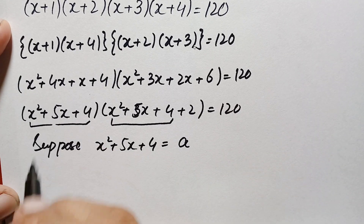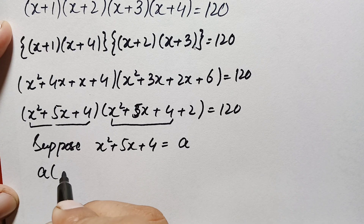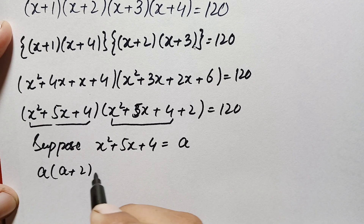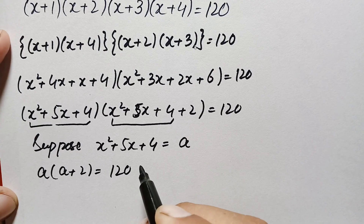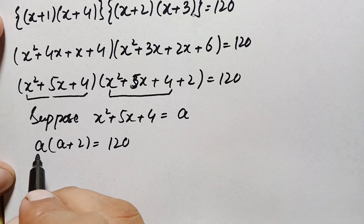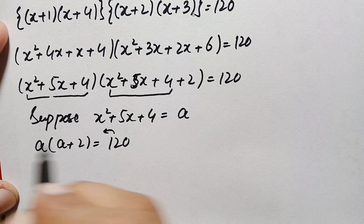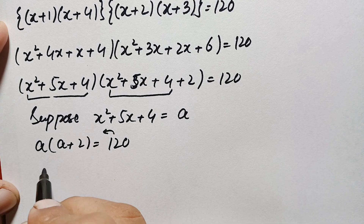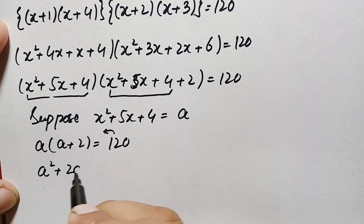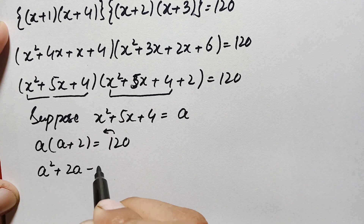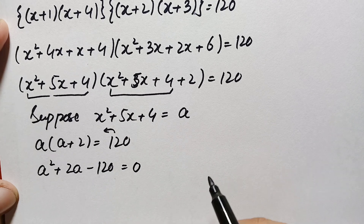Replacing that expression with a, the equation becomes a(a+2) = 120. Multiplying out and moving 120 to the left hand side, this becomes a²+2a−120 = 0.